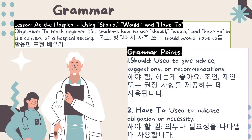Grammar. 이런 상황에서 자주 쓰는 should, have to를 활용한 표현 배역입니다. Number one: Should — use to give advice, suggestions, or recommendations. (조언, 제안, 권장사항을 말하는 데 사용돼요.) Number two: Have to — use to indicate obligation or necessity. (의무나 필요성을 나타낼 때 사용합니다.)